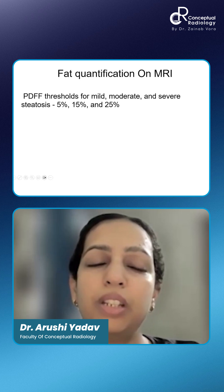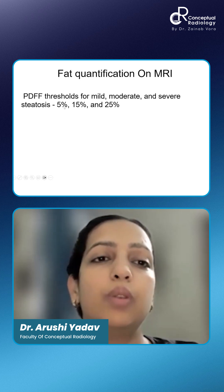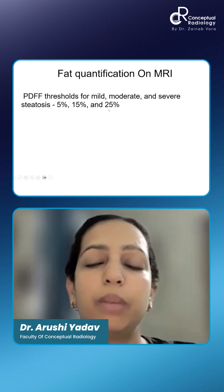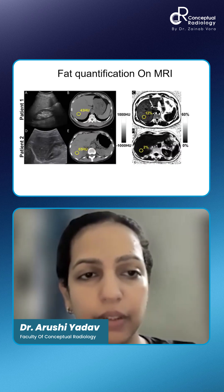The three thresholds generated by such sequences are mild, moderate, and severe. What we use is 5, 15, and 25 percent for mild, moderate, and severe, respectively.